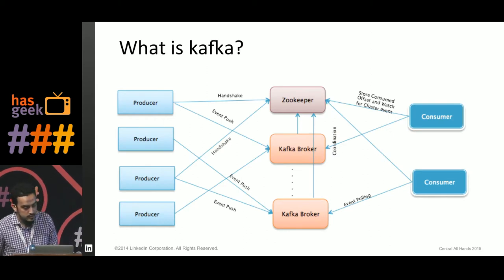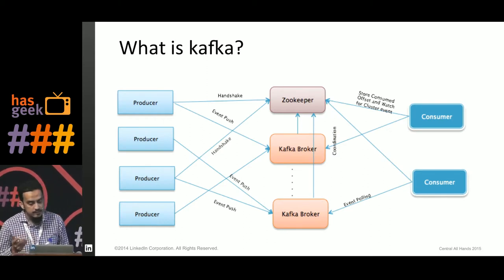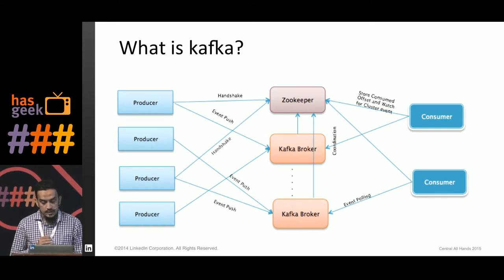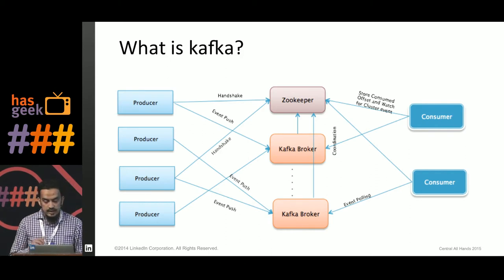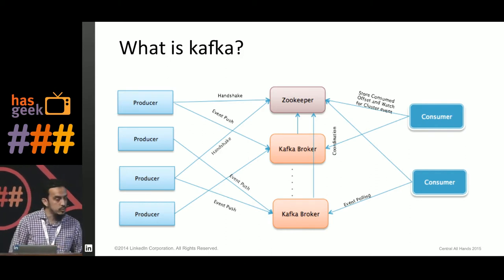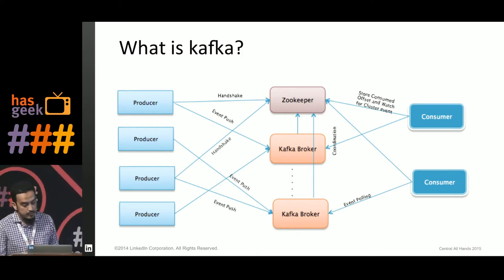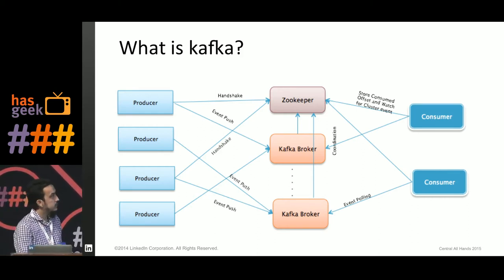Kafka is an open source message brokering system now under Apache. It was written in Scala, and its aim was to provide a unified, high-throughput, low-latency, real-time feed for performance handling.